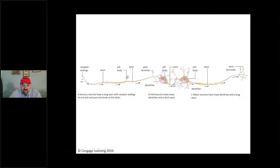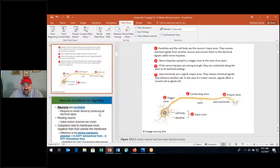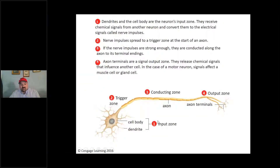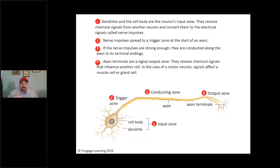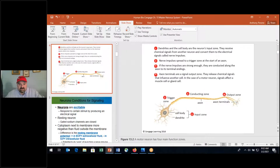Not all neurons in the body have myelin, but many do. Neurons going to skeletal muscle absolutely have myelin to allow for fast, quick communication between the neuron cell body and the muscle, gland, or other neuron. In the central nervous system, oligodendrocytes produce the myelin, while in the peripheral nervous system it's the Schwann cells.